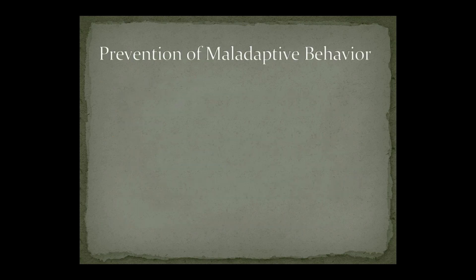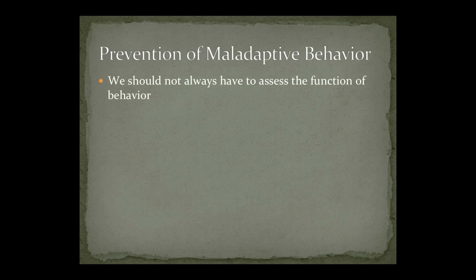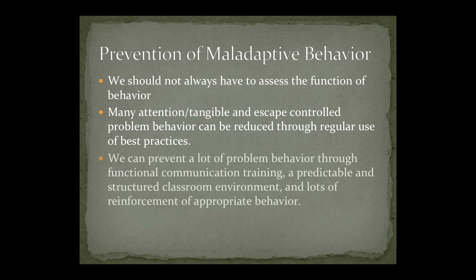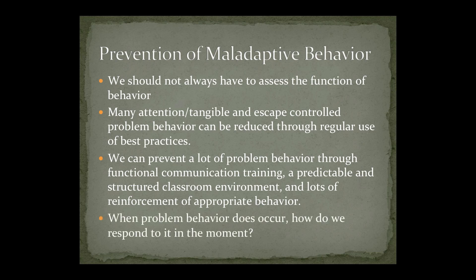Prevention of Maladaptive Behavior: we should not always have to assess the function of behavior. Many attention, tangible, and escape-controlled problem behaviors can be reduced through regular use of best practices. We can prevent a lot of problem behavior through functional communication training, a predictable and structured classroom environment, and lots of reinforcement of appropriate behavior. When problem behavior does occur, how do we respond to it in the moment?